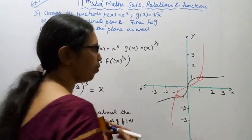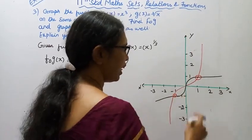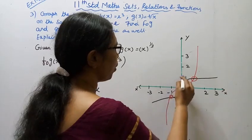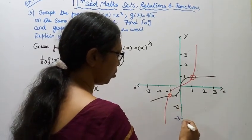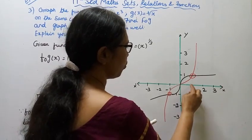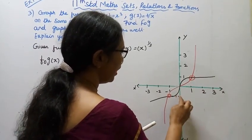Now we'll draw the graph. One, two, three, minus one, minus two, minus three. One, two, three, minus one, minus two, minus three.